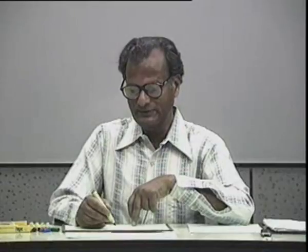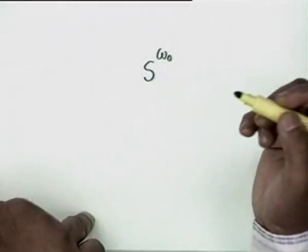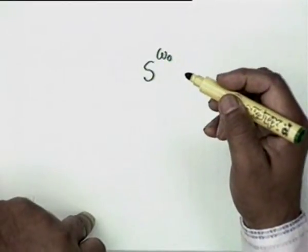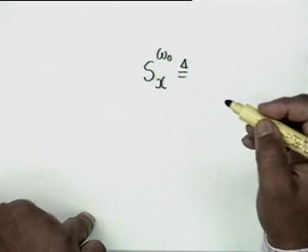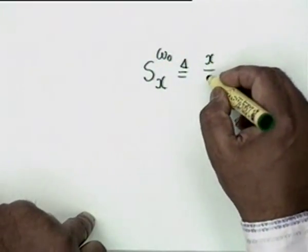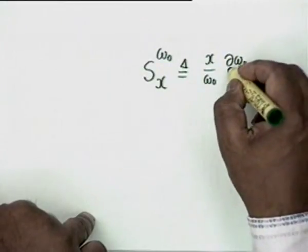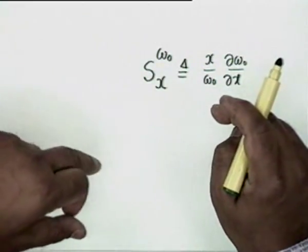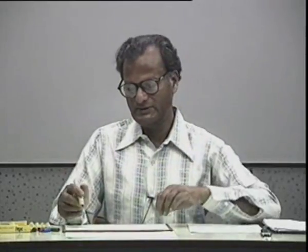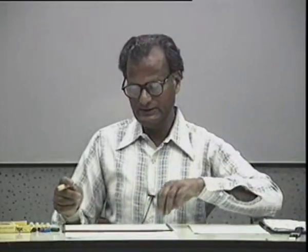There can be drift in ω₀ over time. If you keep the circuit on for a very long time, transistor heat dissipation may be enough to change the circuit elements. A measure of frequency stability is the sensitivity parameter: S(ω₀, X) = (X / ω₀) · (∂ω₀ / ∂X), where X may be a multiplicity of parameters — resistor, capacitor, inductor, temperature, humidity, and many other conditions. This is a measure of frequency stability for any oscillator.